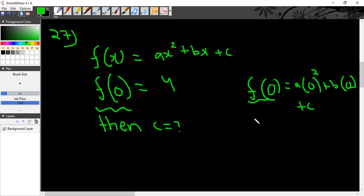Now f(0) is given as 4, so 4 = a·0, this becomes 0, plus this also becomes 0, plus c. So c = 4, and your answer is option B.